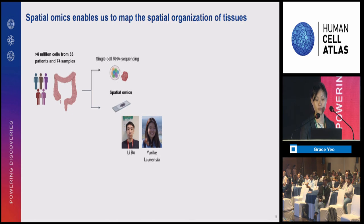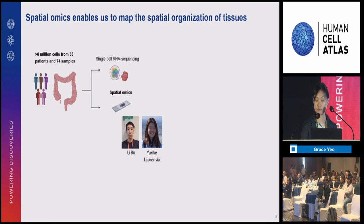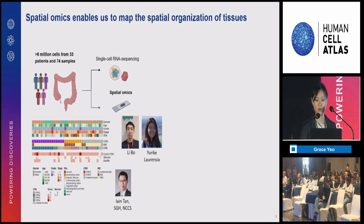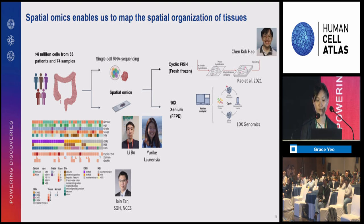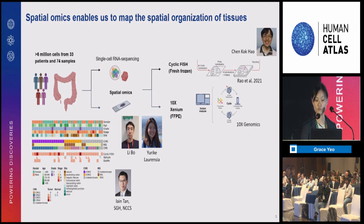My colleagues Bo and Eureka carried out spatial omics on a large cohort of 33 patients and 74 samples, looking at over 6 million cells across diverse clinical and molecular subtypes. We looked at both fresh frozen and FFPE tissues via our clinical collaborator Dr. Ian Tan from Singapore General Hospital and the National Cancer Center Singapore. We examined two technologies: cyclic FISH, developed by Chen Kok Hao at GIS and optimized by Bo and Eureka for fresh frozen tissues, and also 10x Xenium for FFPE tissues.